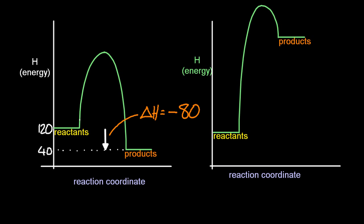So as the products are more stable than the reactants, that is an exothermic reaction. Delta H is negative for exothermic. Seems a little counterintuitive, but 80 energy units were released.